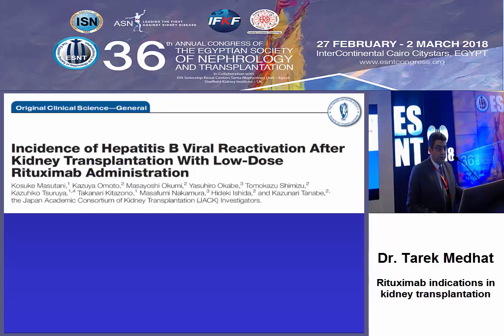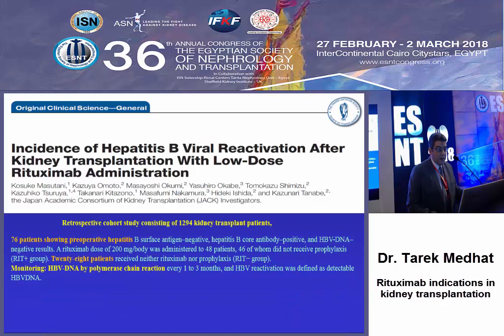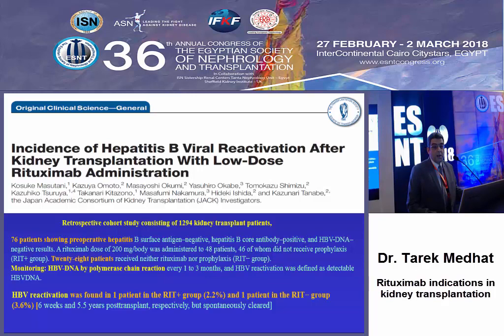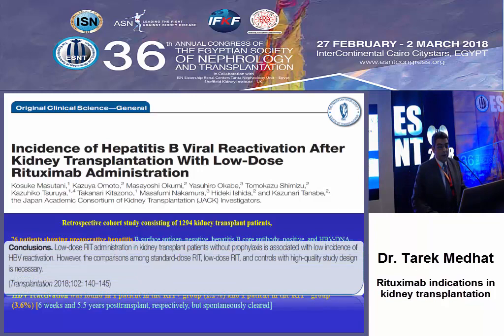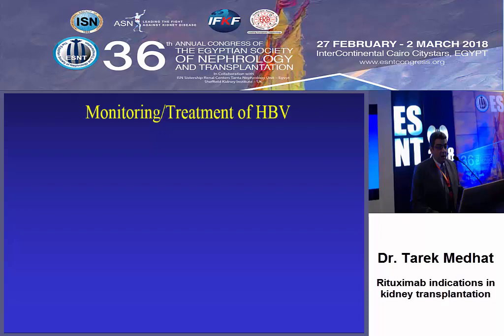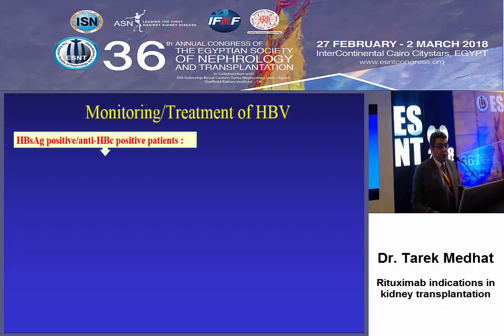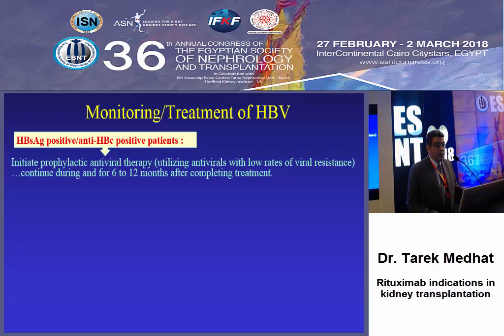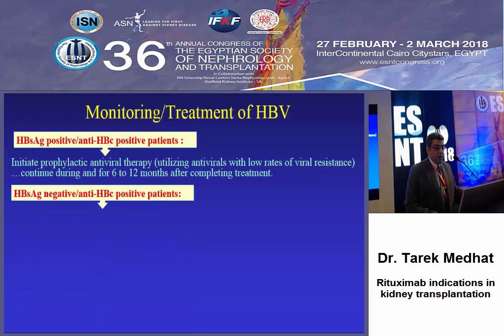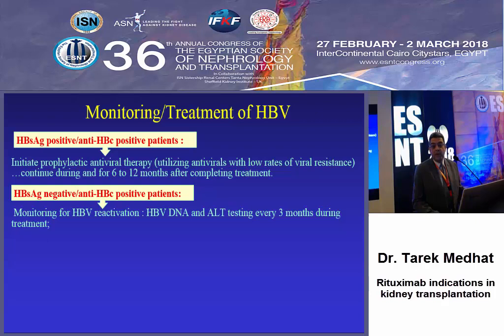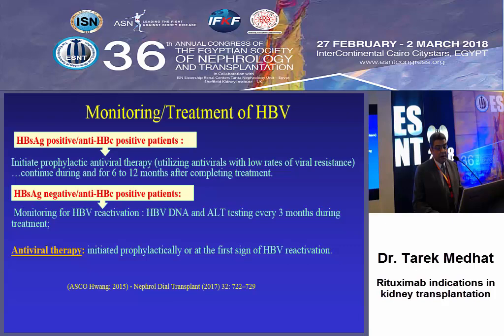A recent study showed the rate and timing of complications, with the most common being viral infections and more bacterial and viral complications occurring in the six months after infusion. Regarding hepatitis B reactivation with rituximab, a retrospective study including a large number of kidney transplant recipients showed reactivation was found in only one patient in the rituximab group when using low-dose rituximab. For hepatitis B surface antigen-positive patients, initiate prophylactic antiviral therapy with low rate of viral resistance and continue for six to twelve months after completing treatment. For hepatitis B surface antigen-negative but anti-hepatitis B core antibody-positive patients, monitor for hepatitis B reactivation using ALT and hepatitis B virus DNA every three months during treatment, and initiate antiviral therapy if reactivation occurs.